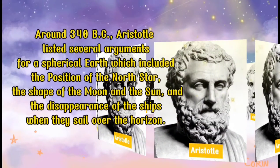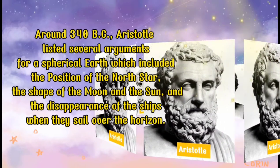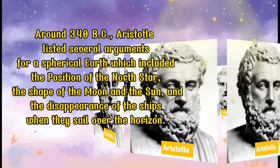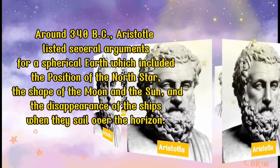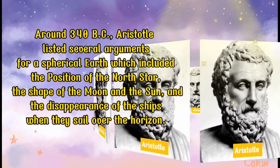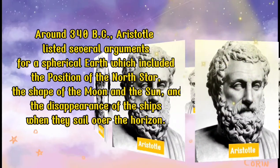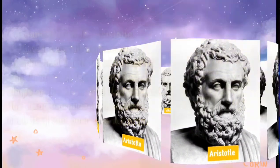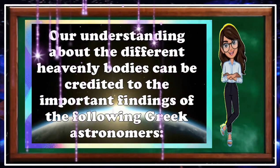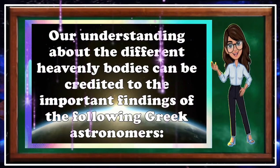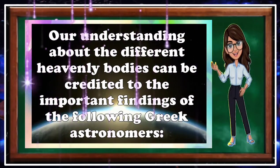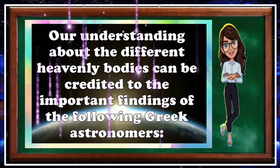Around 340 BC, Aristotle listed several arguments for a spherical Earth, which included the positions of the North Star, the shape of the moon and the sun, and the disappearance of ships when they sail over the horizon. Our understanding about the different heavenly bodies can be credited to the important findings of the following Greek astronomers.